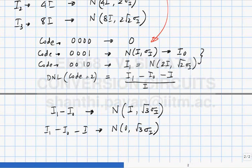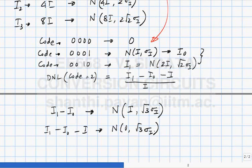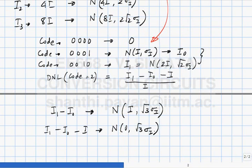So I_1 minus I_0 minus I becomes a random variable with zero mean and standard deviation root(3)*sigma_I. Dividing by I gives the normalized DNL. Each unit current source has variation sigma_I, but the difference between two independent current sources has a larger standard deviation. This is because both vary randomly and independently — when you subtract two independent random variables, the variance adds up, so the randomness increases even though the mean is correct.